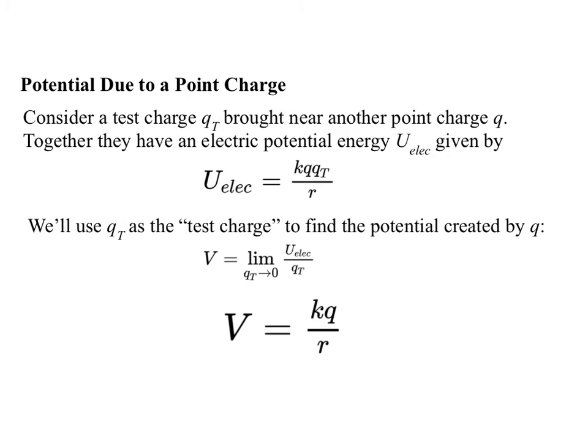Consider a test charge Q sub T, which is brought near some other point charge Q. We know that together they have an electric potential energy, which is given by Coulomb constant times the product of the charges over the distance. Keep in mind here that it's the distance. It's not R squared. Why? Because we're talking about energies, not forces.